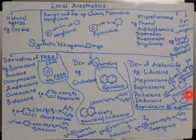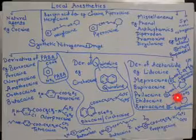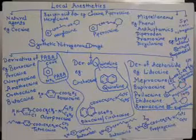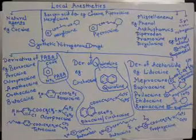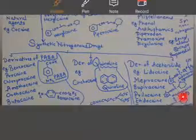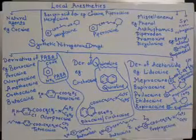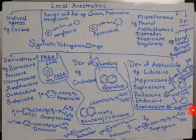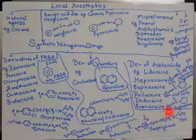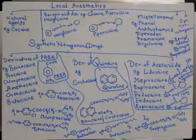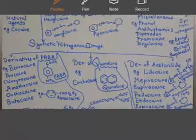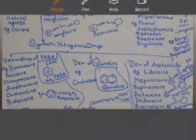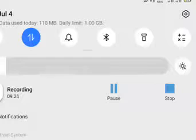For mepivacaine: draw the same xylene-amide basic setup, then draw a piperidine ring with a methyl group on the nitrogen — 'me' for methyl, 'p' for piperidine. For bupivacaine: draw the same as mepivacaine but replace methyl with butyl. This concludes the short introduction to classification and basic structures of local anesthetics.